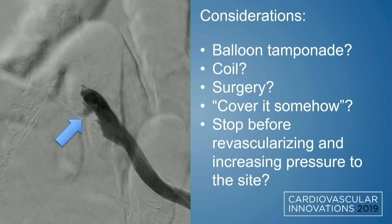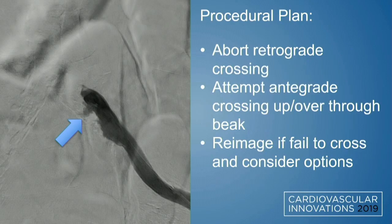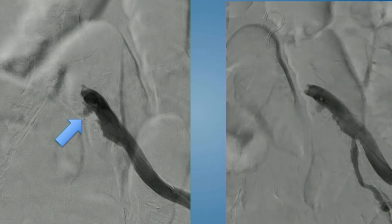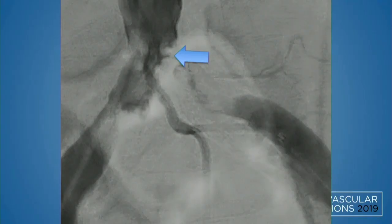We talked through and considered all options. Hemodynamics were stable — we weren't rapidly becoming tachycardic and hypotensive. We kept taking pictures to see if the extravasation was expanding or continuing to bleed. We decided to stop retrograde attempts, as our wires and devices would likely keep tracking into that false track, and instead try an alternate axis strategy — crossing up and over — to then either cover the perforation if it persisted or make other treatment decisions. We kept taking pictures; if anything, there was a little less contrast extravasation and hemodynamics remained stable.